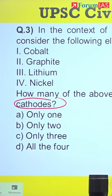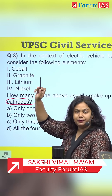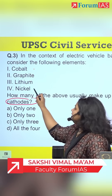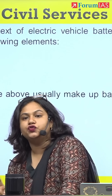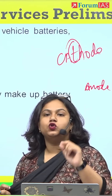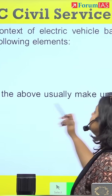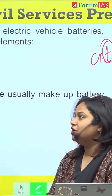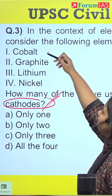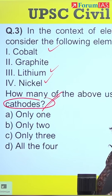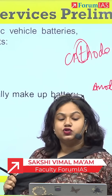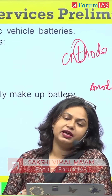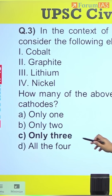Now let's look at the options: cobalt, which is a metal; graphite, which is a non-metal carbon; lithium, which is a metal; and nickel, which is a metal. From class 10 chemistry, metals are electron donors and form positive ions. Positive ions are found at the cathode — the positively charged terminal. So my metals are cobalt, lithium, and nickel — not graphite. Graphite, being a non-metal, is used as the anode, the negative terminal. So the answer is three.